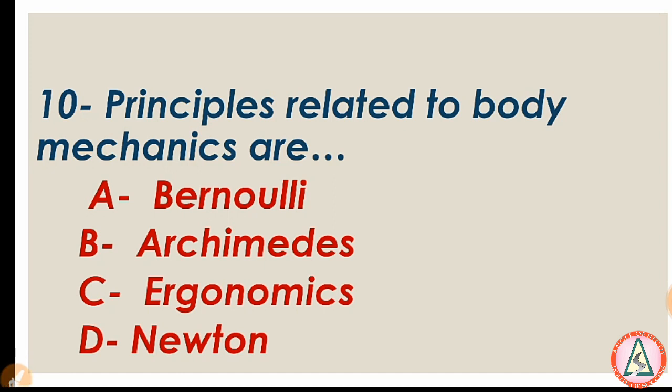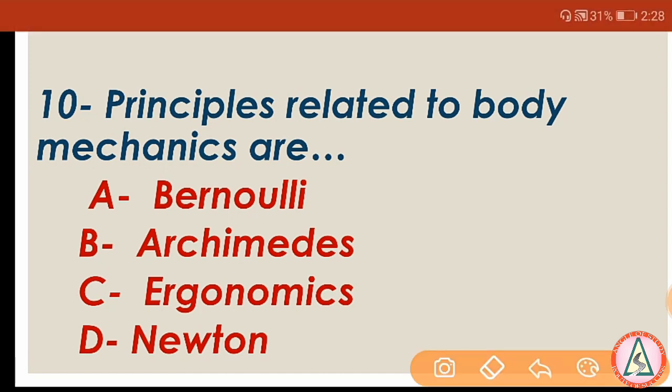Question number 10, the last question: Principles related to body mechanics are: A) Bernoulli, B) Archimedes, C) Ergonomics, D) Newton. The right answer is Ergonomics. Ergonomics is the study of prevention of occupational disease — working by natural law. When ergonomics is applied correctly to the work environment, visual, musculoskeletal discomfort and fatigue are reduced.